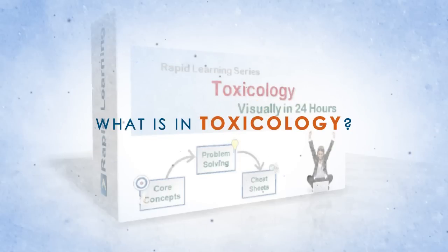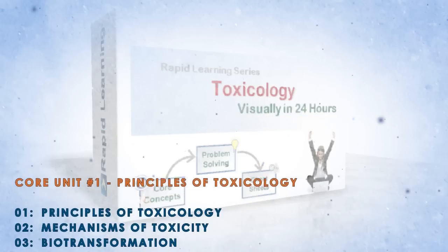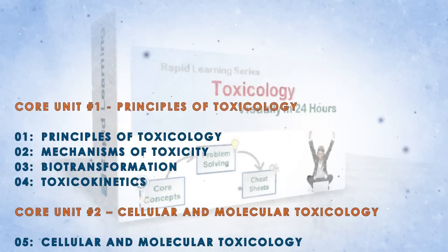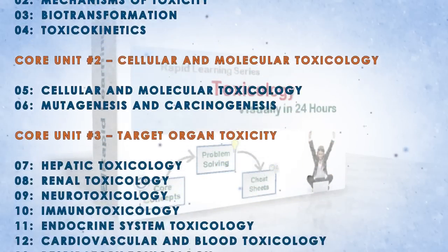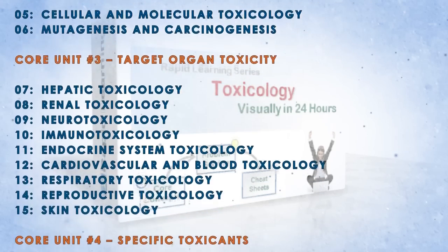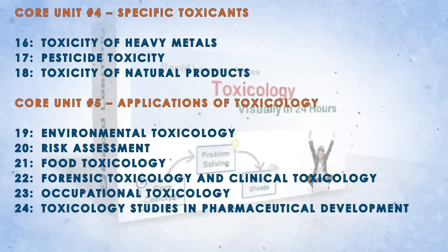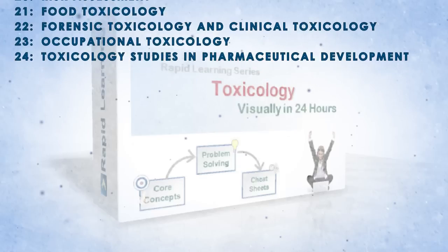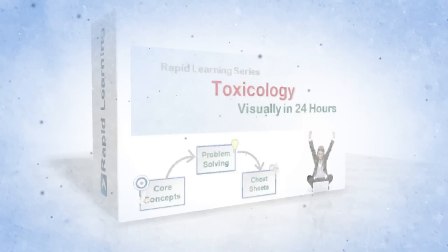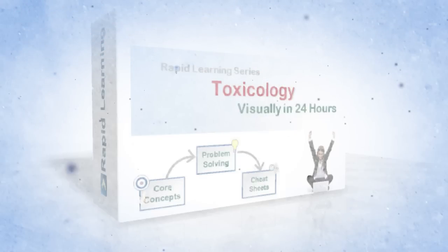There are 24 chapters to cover each and every topic visually. The topics include principles of toxicology, cellular and molecular toxicology, target organ toxicity, specific toxicants, applications of toxicology. Learn toxicology visually and master it the rapid learning way.